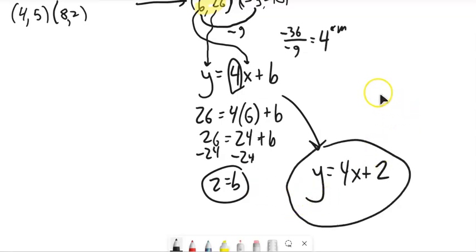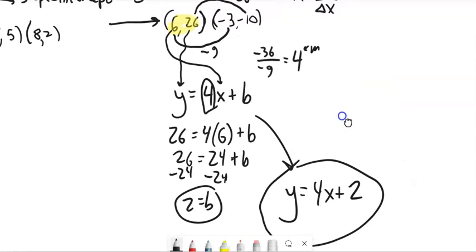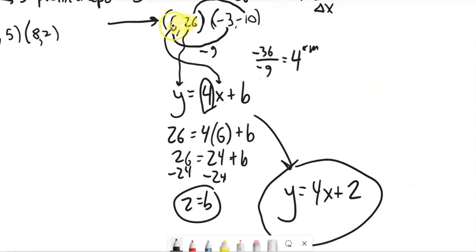And it's really easy for me to check if I'm right on these because what I can do is plug in 6 for x, it should spit out 26 for y. Plug in negative 3 for x, it should spit out negative 10 for y.